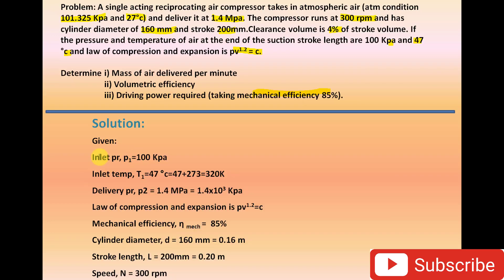The given data: inlet pressure P1 is 100 kPa. Inlet temperature T1 is 47 degrees Celsius, which converts to 320 Kelvin. Delivery pressure P2 is 1.4 MPa, equal to 1400 kPa. The law of compression and expansion is PV to the power 1.2 equals constant.